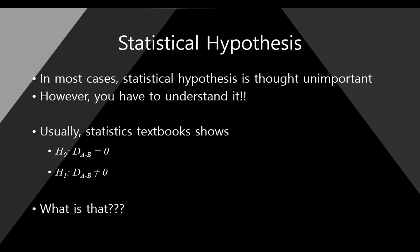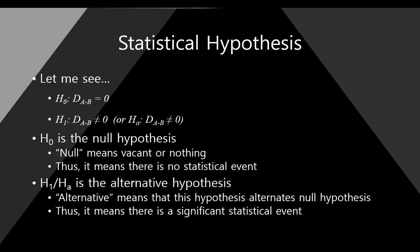If you have checked your statistics books — any textbook — maybe you have seen this kind of notation. Here, H means hypothesis, so there are two hypotheses. The first one is H0. We call it the null hypothesis. I describe the null hypothesis as dA minus B equals 0. You must remember: equals 0.